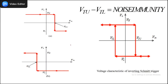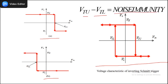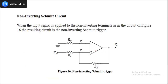Combining the two figures (case A and case B) gives a window. The difference between the upper threshold VTU and lower threshold VTL is called the noise immunity. If the input levels are within this range, the circuit will be immune to noise. This is the voltage transfer characteristic of the inverting Schmitt trigger.